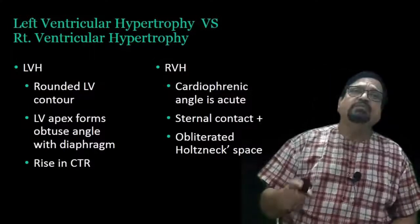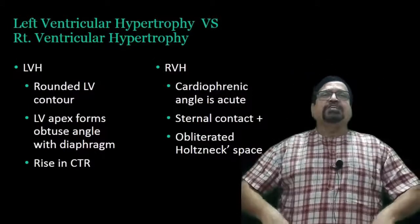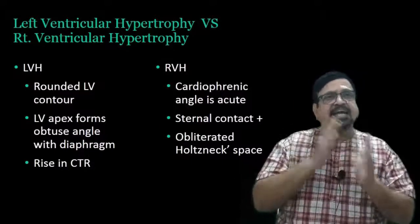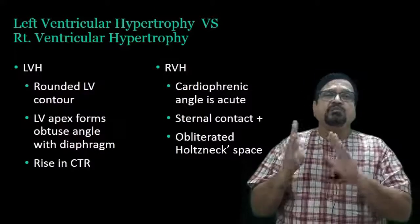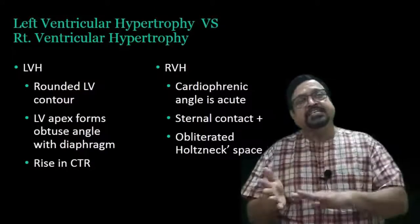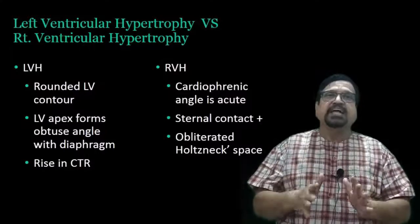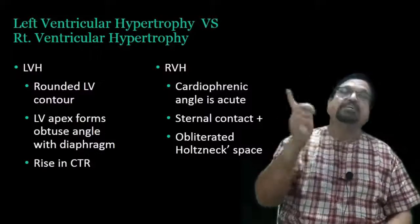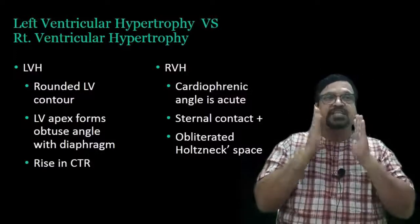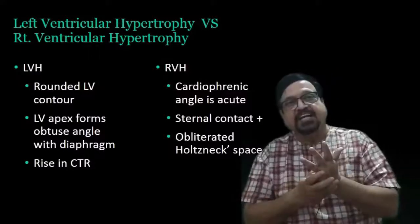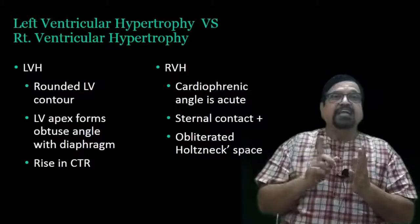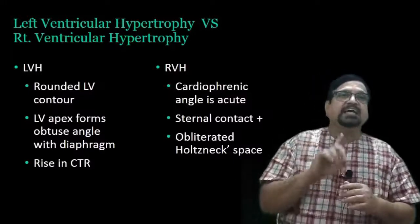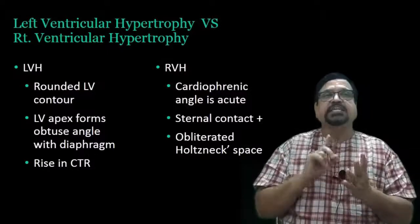Left ventricular hypertrophy versus right ventricular hypertrophy. What happens in left ventricular hypertrophy: the LV apex forms an obtuse angle with the diaphragm, and there is a rise in cardiothoracic ratio. What happens in right ventricular hypertrophy: the cardiothoracic angle becomes acute, sternal contact is there which is seen on lateral X-ray. The LV apex is rounded. Cardiothoracic ratio is raised in LV hypertrophy.